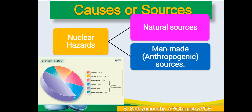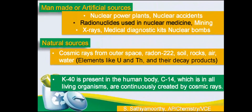What are the causes or sources of nuclear hazards? There are two sources: natural and man-made. Just have a look at the chart — it shows that 85% of the radiations are generated naturally, and only 15% of the radiations are generated artificially or man-made. From medicine, 14% of the radiations are produced, and from the nuclear industry only 1% of the radiation is generated. The man-made or artificial sources are nuclear power plants or nuclear accidents, while transporting the radioactive nuclides or the radioactive nuclides used in nuclear medicine.